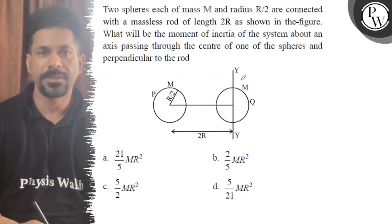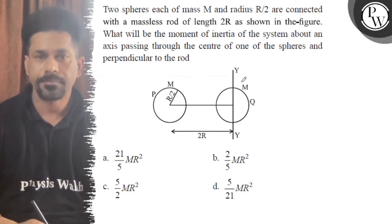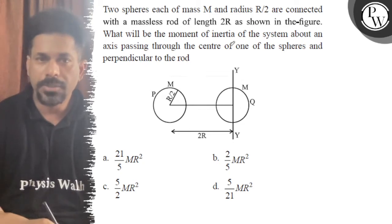Hello, let's see the question. Two spheres, each of mass M and radius R/2, are connected with a massless rod.